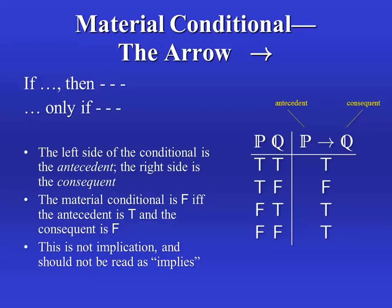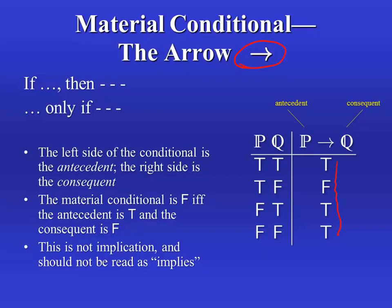Next we have the material conditional, the if-then, which we represent with an arrow. To form a conditional statement from two components, we just put the arrow between them to form the compound. We have two different parts to the conditional: the part that comes before the arrow, which we call the antecedent, and the part which comes after the arrow, which we call the consequent. The truth value distribution might seem a little strange, but the basic idea is that we will only count this if-then as false when the antecedent — the 'if' part — is true and the consequent — the 'then' part — is false.